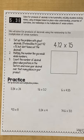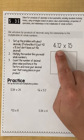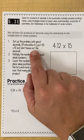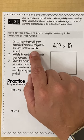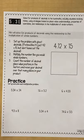Okay, so the problem we're going to use is 4.12 times 15. We're going to set up the problem with the ghost decimals, pretending like it is 412 times 15, but then we're going to add that decimal back in.